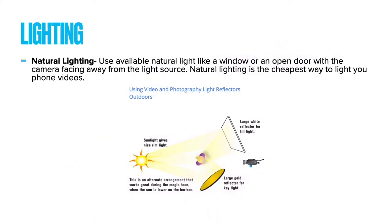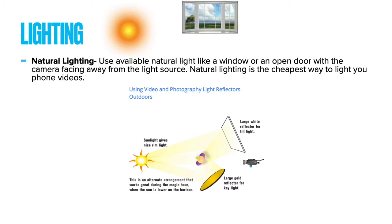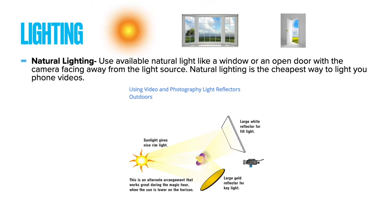Natural lighting. Use available natural light like a window or an open door with the camera facing away from the light source. Natural lighting is the cheapest way to light your phone videos. As you can see in the diagram: the sun is at nine o'clock, the camera is at three o'clock, the subject is facing the camera. There is a large gold reflector for key light and a large white reflector for fill light. This is an alternate arrangement that works great during the magic hour when the sun is lower on the horizon.